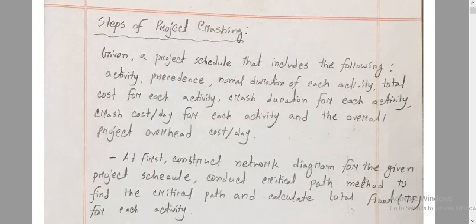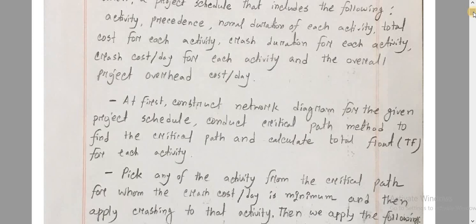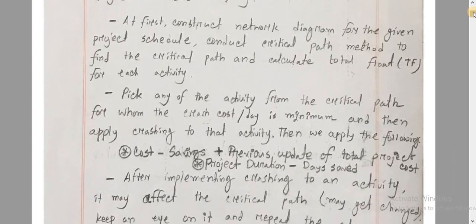The first step: construct a network diagram for the given project schedule. Then conduct the critical path method to find the critical path and calculate the total float for each activity. So, project crashing continues to find the critical path.